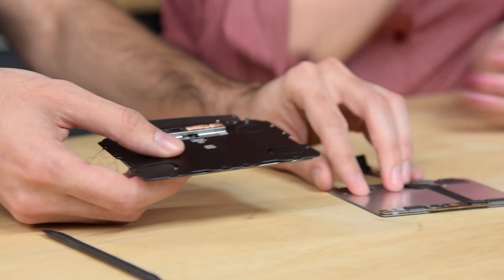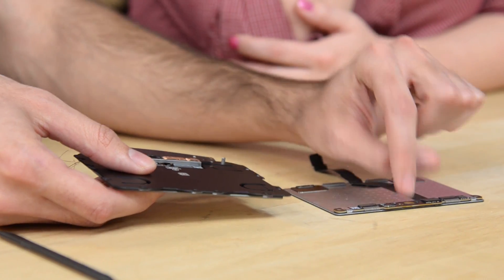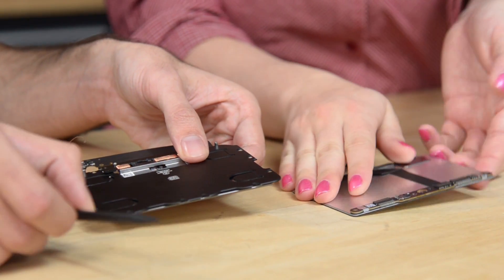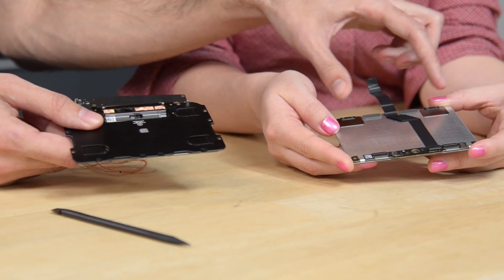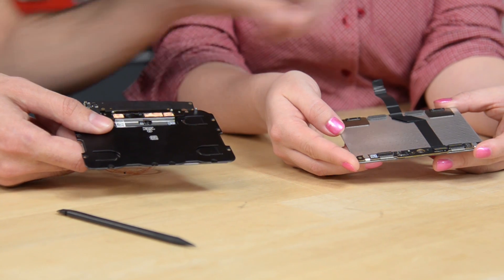So we used to have a single micro switch right here. Single micro switch that would register every click. While the whole trackpad bounced on these two hinges back here.